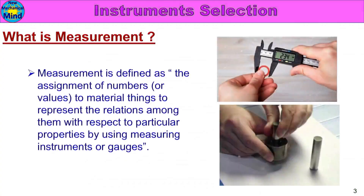First, What is Measurement? Measurement is defined as the assignment of numbers or values to material things to represent the relations among them with respect to particular properties, by using measuring instruments or gauges.